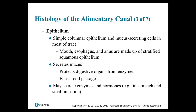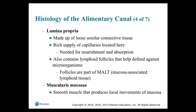The lamina propria is made up of loose areolar connective tissue with a rich supply of capillaries needed for nourishment and absorption. It also contains lymphoid follicles that help defend against microorganisms — these follicles are part of MALT, the mucosa-associated lymphoid tissue. The muscularis mucosa is a narrow band of smooth muscle and elastic fibers in the lamina propria that produces local movements of the mucosa. The inner layer encircles the lumen as circular muscle; the outer layer contains muscle cells oriented parallel to the long axis of the tract — the longitudinal layer. Contractions in these layers alter the shape of the lumen and move the epithelial pleats and folds.